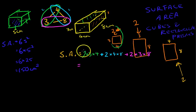After that, it's really just a matter of getting that all into your calculator and coming up with an answer. So two times three is six, times four is 24, plus two times four times eight. Four times eight is 32, times two is 64, plus two times three is six, times eight is 48. Now you type all of that into your calculator and you should get an answer of 136.